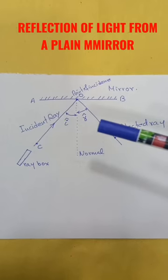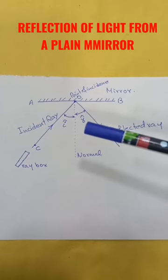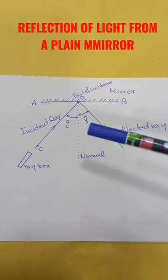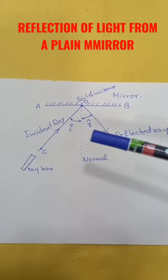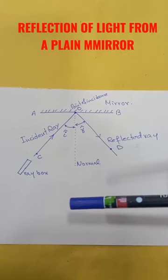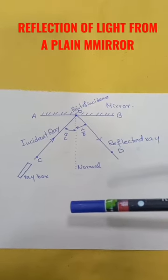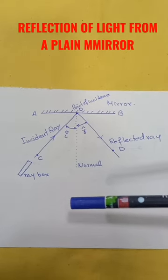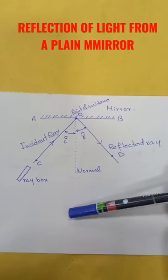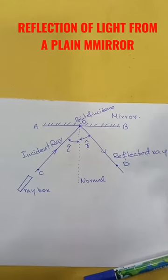The angle between the reflected ray and the normal is called the angle of reflection. The incident ray, the reflected ray, and the normal lie in the same plane. The angle of incidence and angle of reflection are equal to each other.